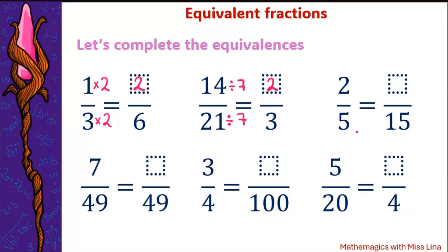In this case from five to get the 15 we multiplied by three. So same operation at the top. Two times three is six. Two fifths is equivalent to six fifteenths.